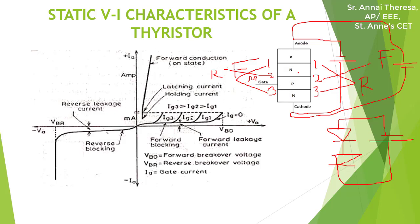To make the thyristor conduct, there are two ways. One way is giving the gate signal to the gate terminal — by doing this, the thyristor will be turned on and current starts flowing through different gate current levels IG1, IG2, IG3. Another method is to keep increasing the forward voltage beyond the forward break-over voltage, after which the thyristor starts conducting. So there are two methods to make the thyristor or SCR conduct.